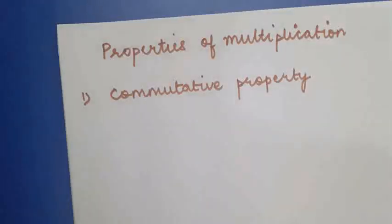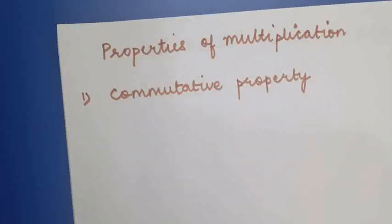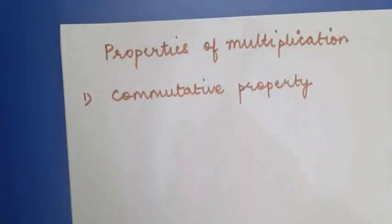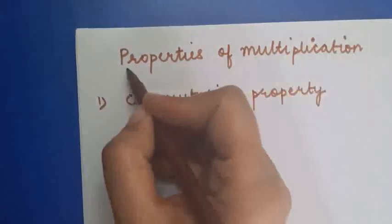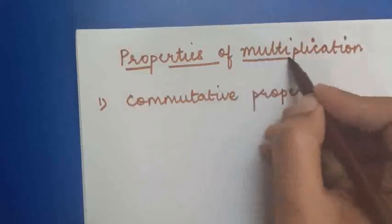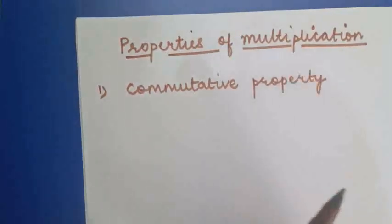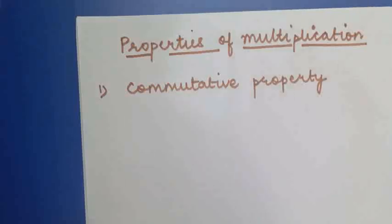Hello students. We have already started with the first chapter on rational numbers, and today we are going to start with the properties of multiplication of rational numbers. The very first property of multiplication of two rational numbers is the commutative property.